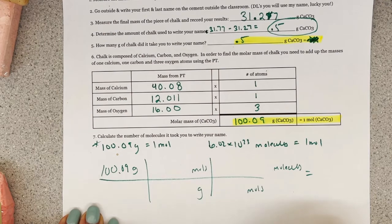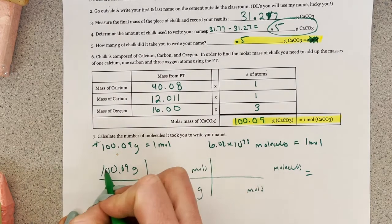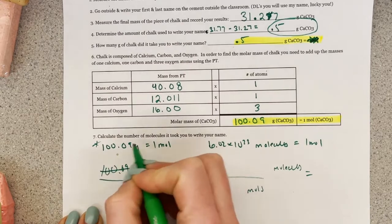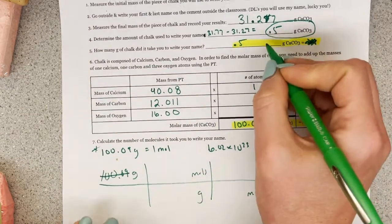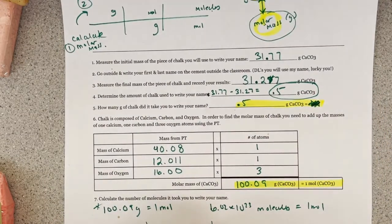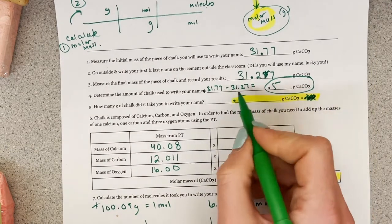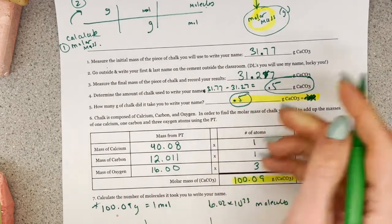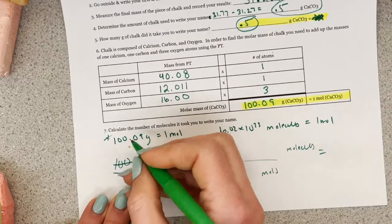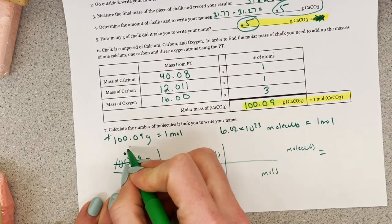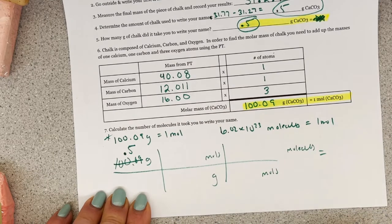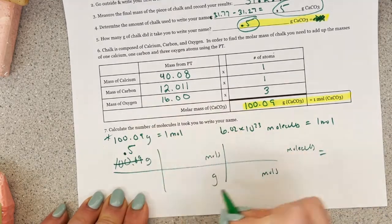Okay, so we start with what we know, and we know that we have 100.09 grams of calcium carbonate. Okay. Oh, that's actually not right. Sorry, Ms. Moore. Wrong. That's part of our conversion factor. How many grams, I apologize, how many grams of calcium carbonate do we have? It took us that many grams to write our name. So, whoops. 0.5 grams right there.